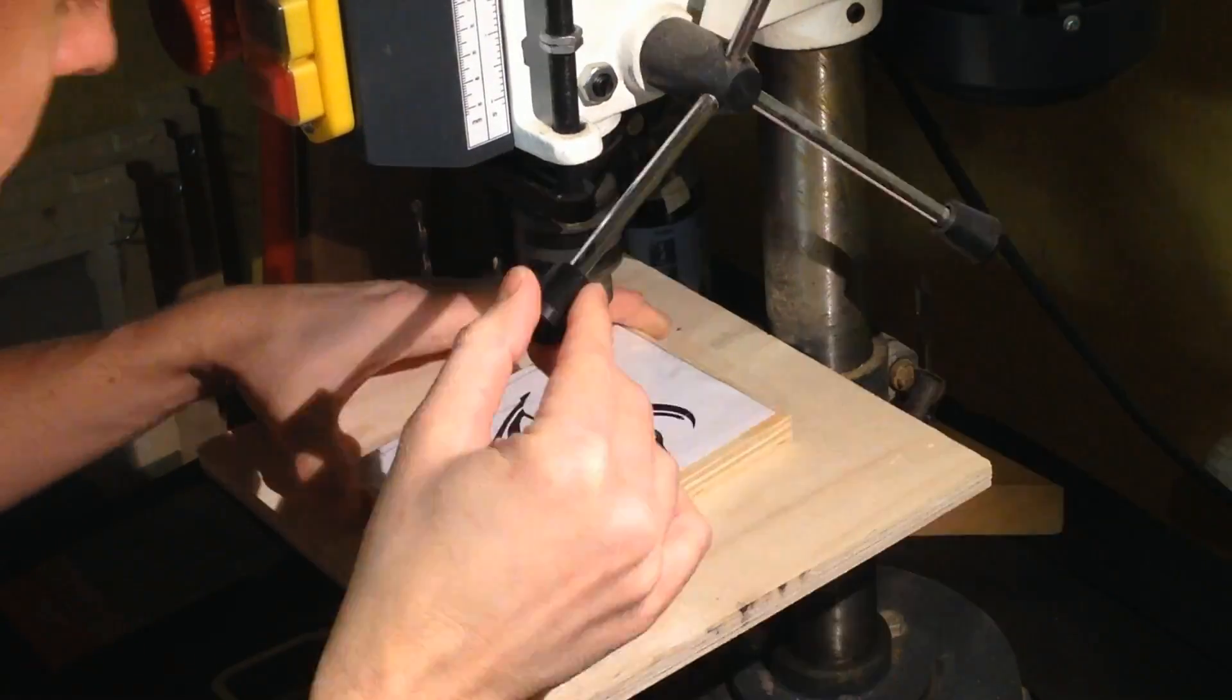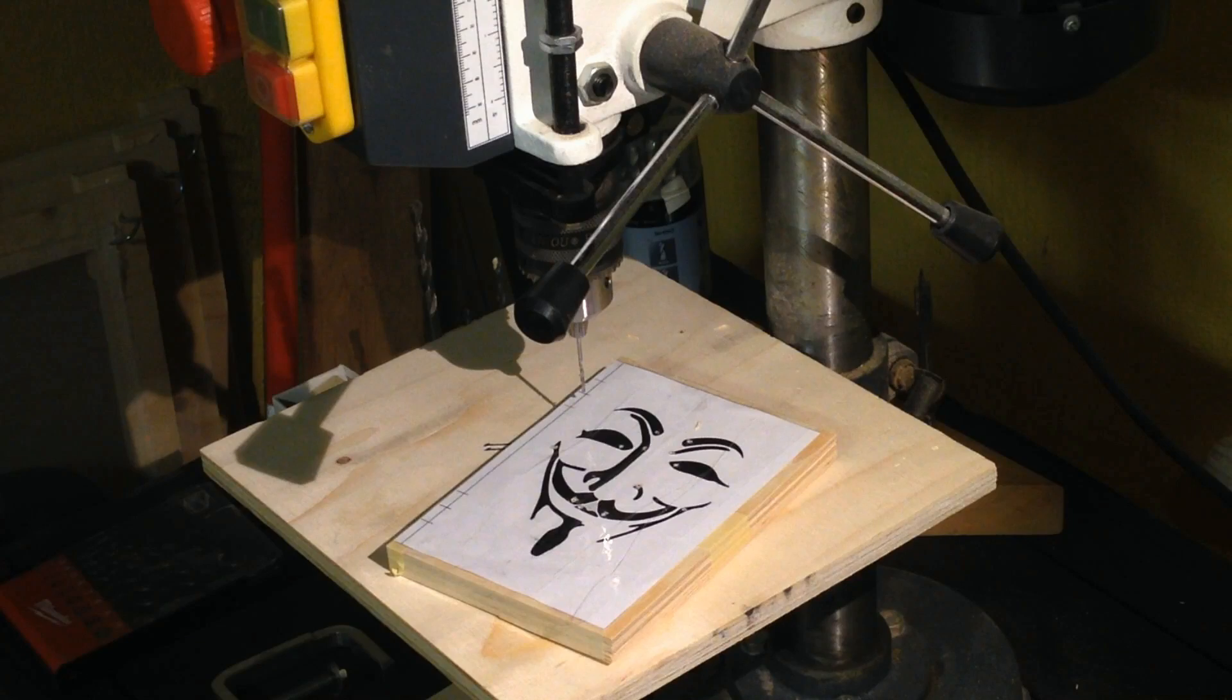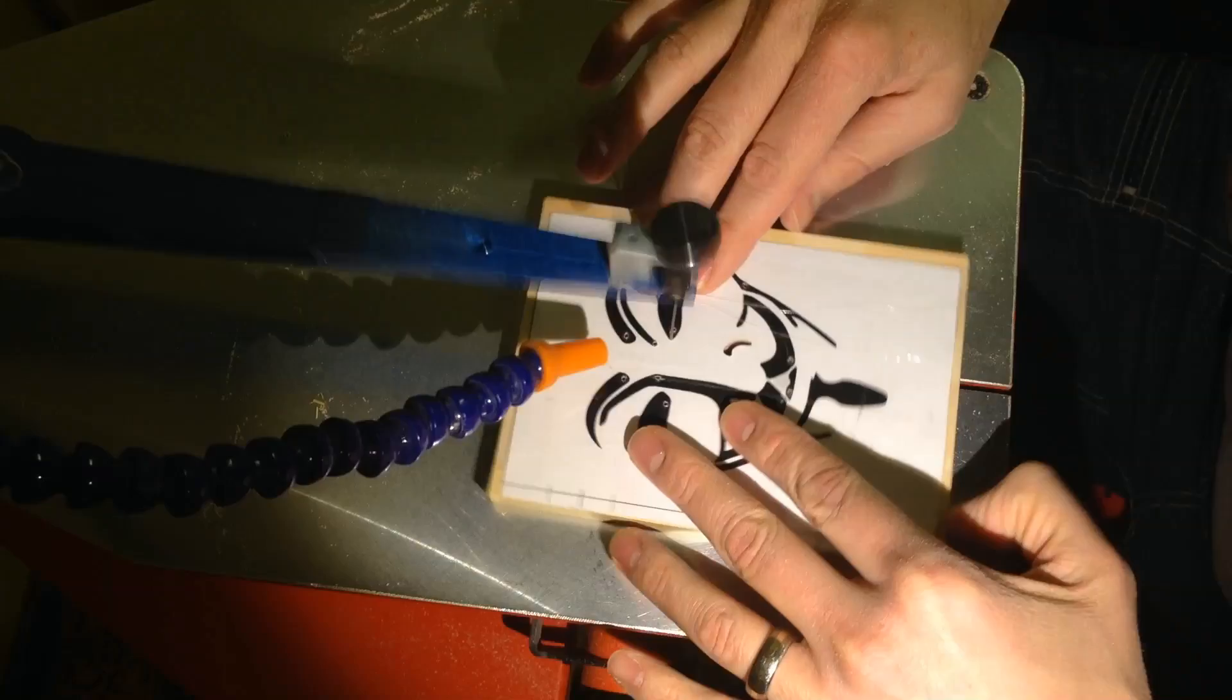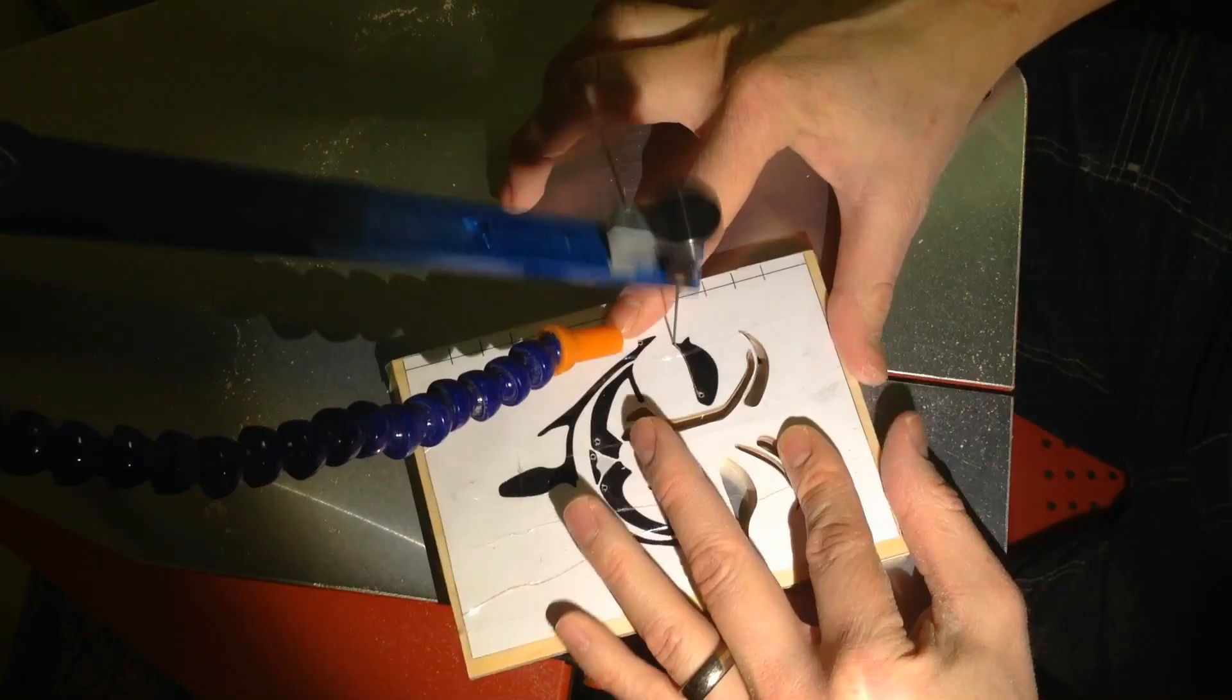Next, all the entry holes are drilled. Cutting is done on the scroll saw using a number five blade. This whole process takes about 40 minutes.